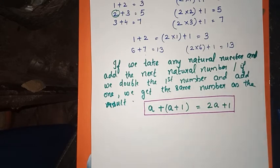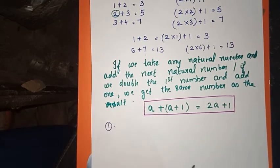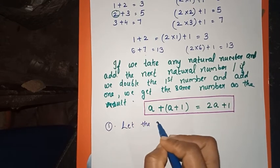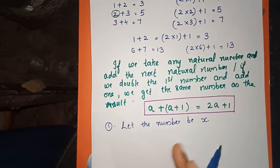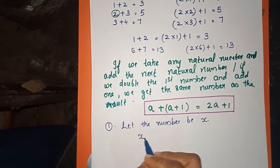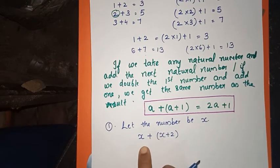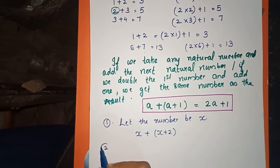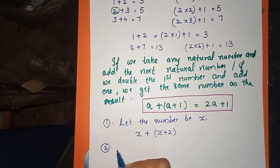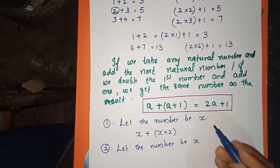Now on page 39: let the number be x. We can use any small English letter. Add 1 to a number gives x plus 1. Add 2 to a number gives x plus 2. Two more than the number is x plus 2.